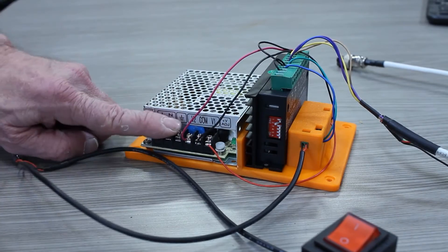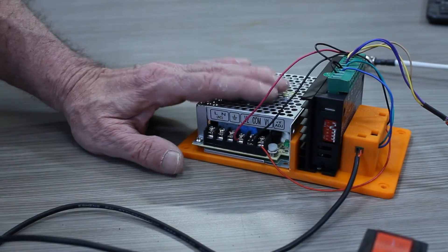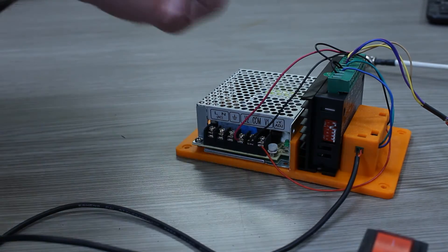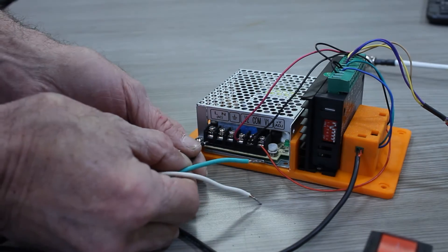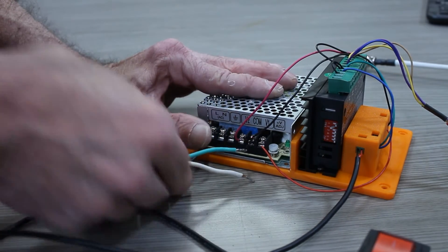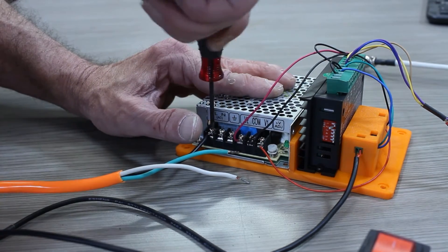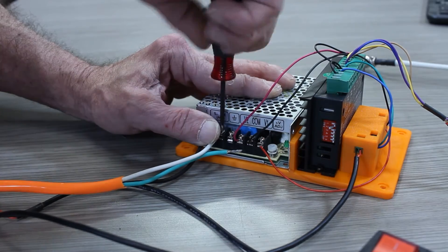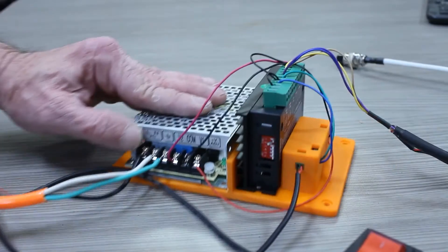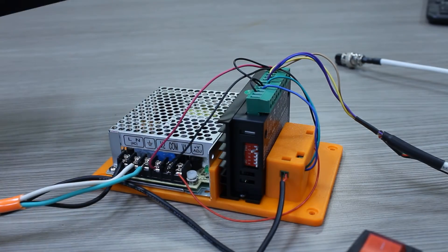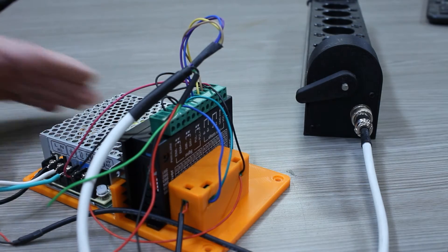So now all we have to do is get power to this. These power supplies can run on 110 or 220 and it automatically switches internally. So let's hook up our wires. I'm just hooking this up to 110. So I've got my line, neutral, ground. All right. So grab a magazine, plug that in. I heard the motors engage.